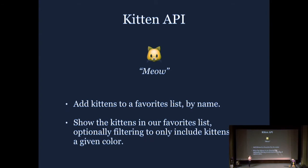To do this, I'm going to need the help of a little API that we're going to work through — our lovely Kitten API. It's got two very simple functions. One is the ability to add a kitten to your favorites list: you give it a kitten name and it will add it to your saved list. The other bit of functionality is the ability to show the kittens in our favorites list, optionally filtering that list down to just kittens of a particular fur color.